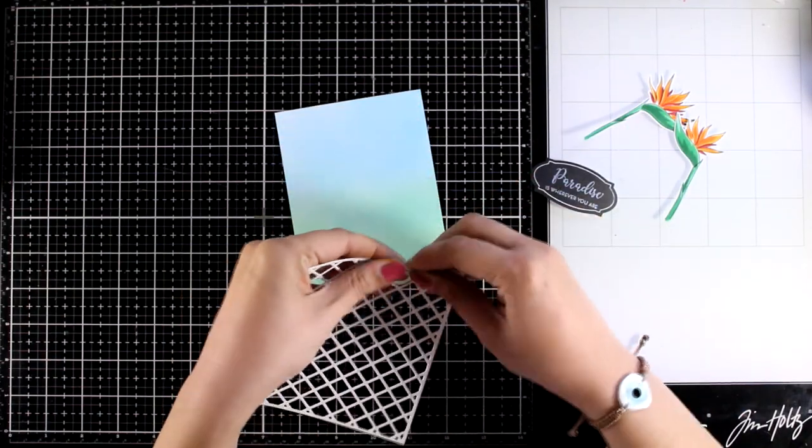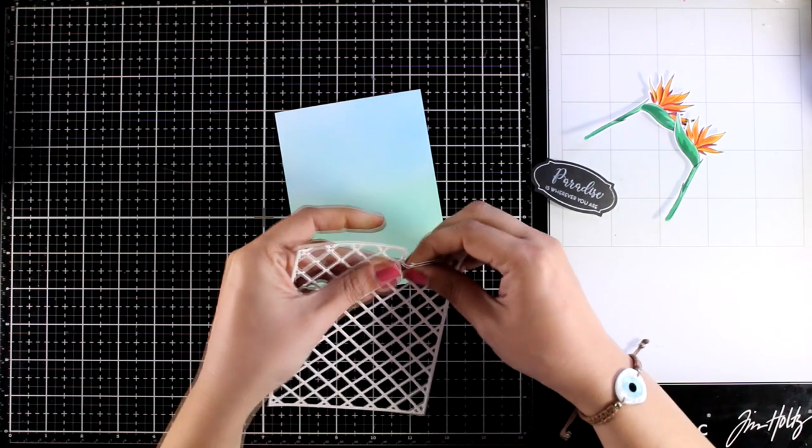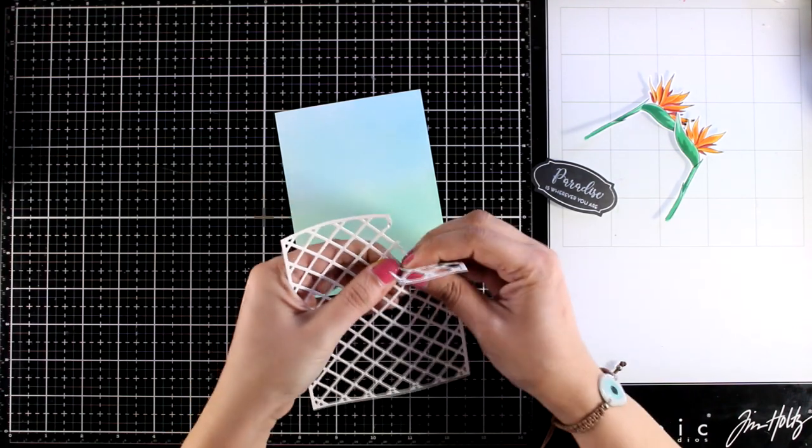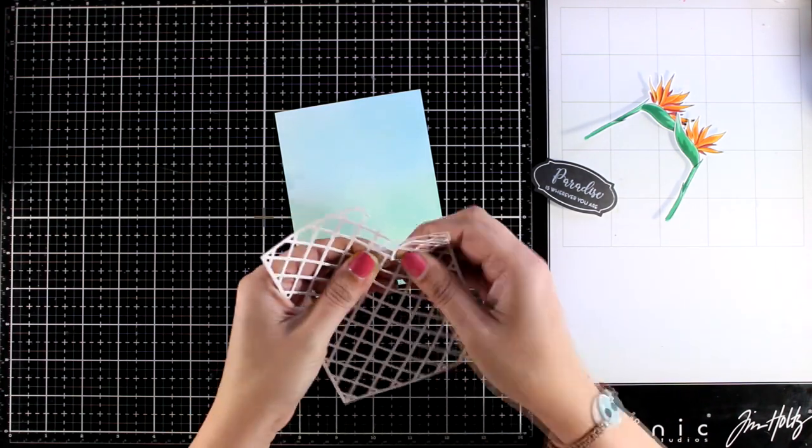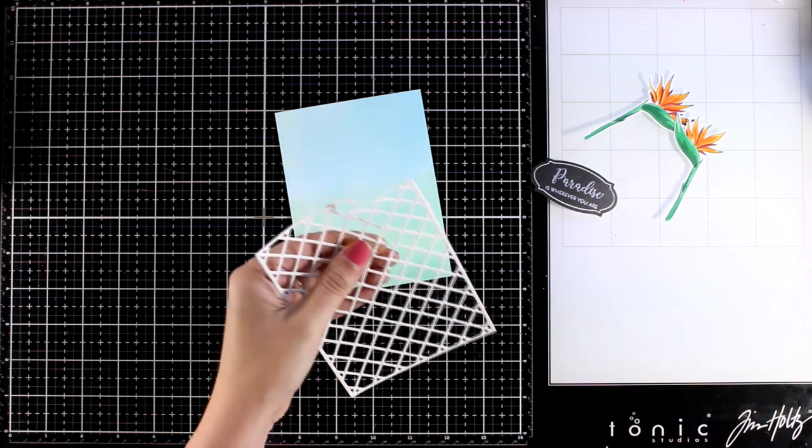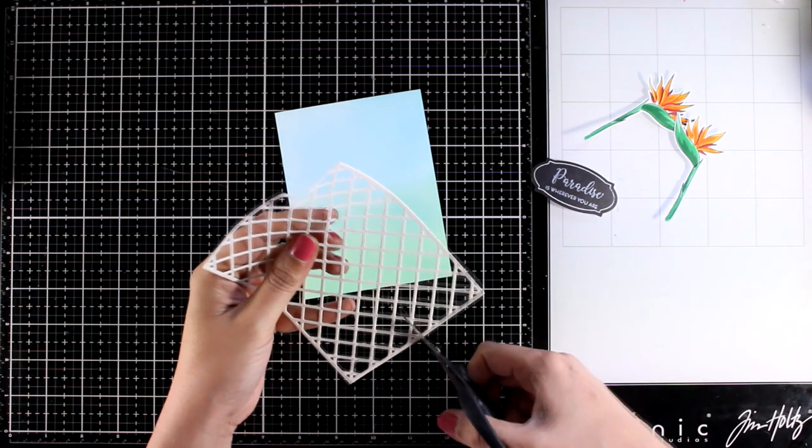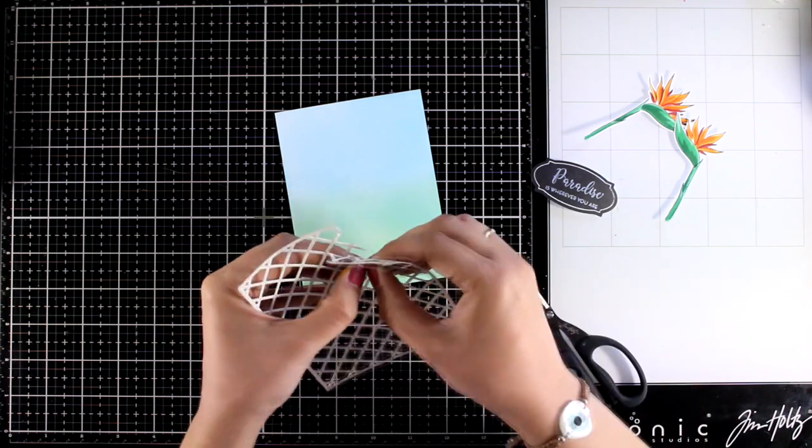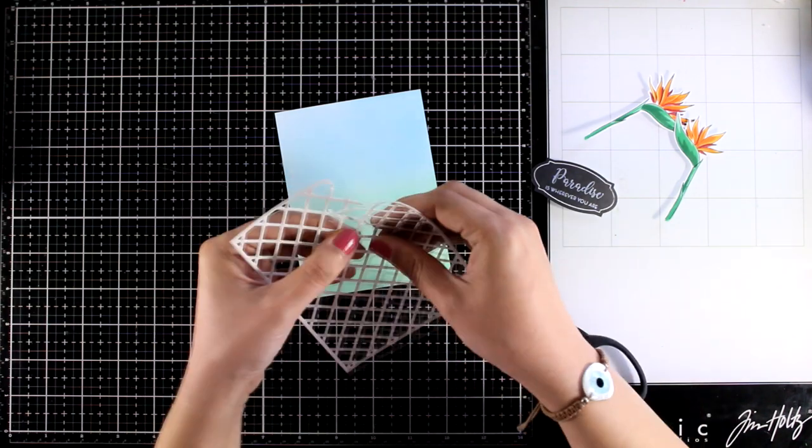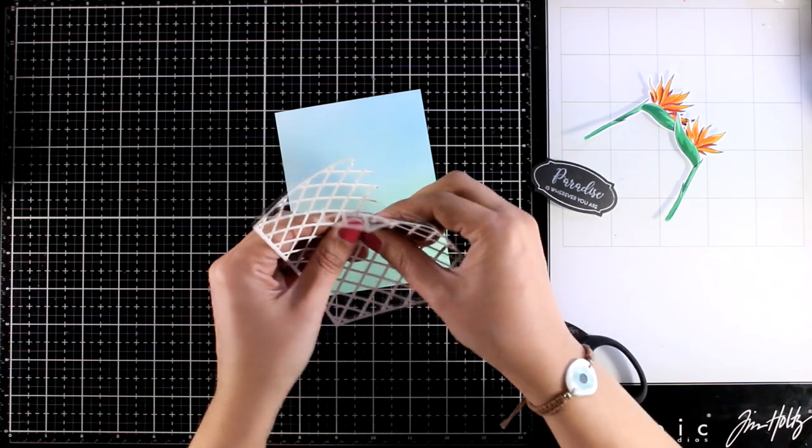And let's put the card together. You can use this cover die as it is on top of your background or like I'm doing you can tear off a part of it just for a more interesting look. Use a scissor if you want to or your fingers for a different effect. I'm going with my fingers since I don't want to have anything perfect here.